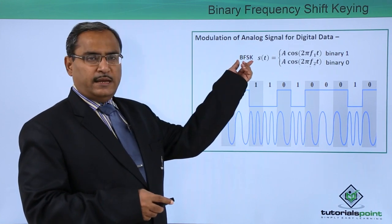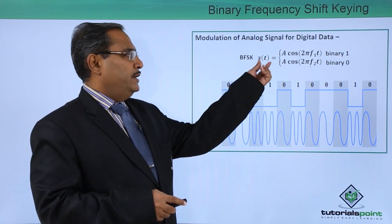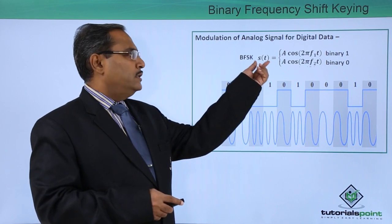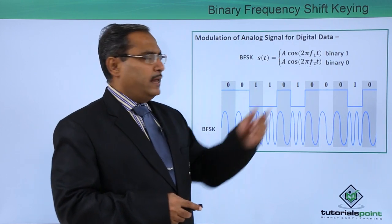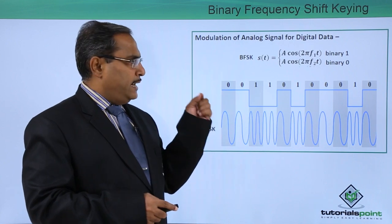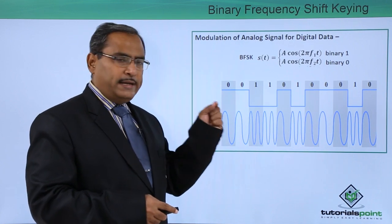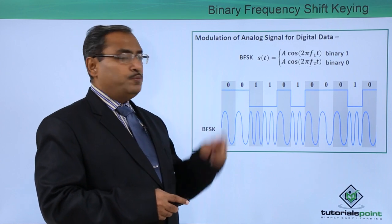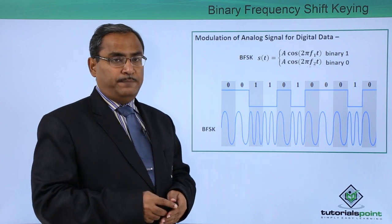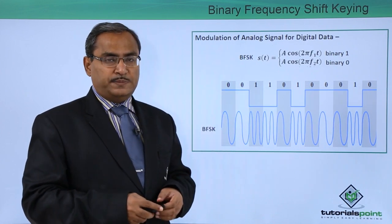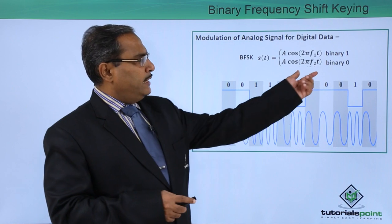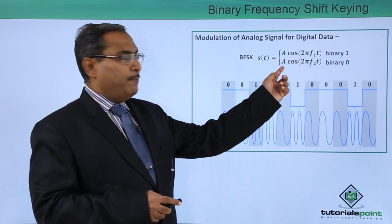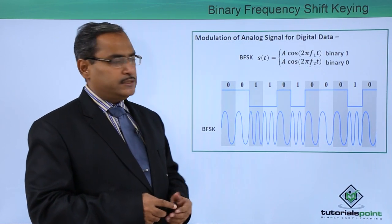For BFSK — Binary Frequency Shift Keying — here is the respective analog signal function. For binary 1, we have A cos 2π f1 t, and for binary 0, we have A cos 2π f2 t, where f1 and f2 are the two respective frequencies. Remember, there is no phase change and there is no change in amplitude — only the frequencies are getting changed.